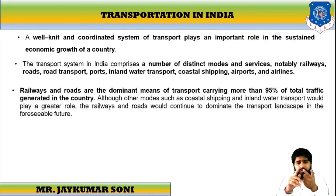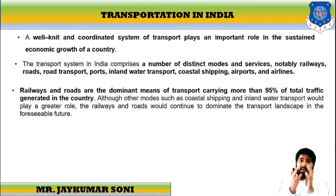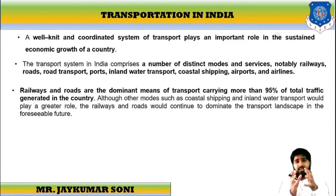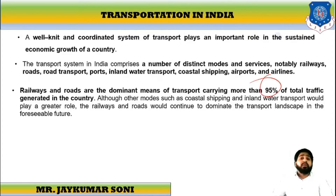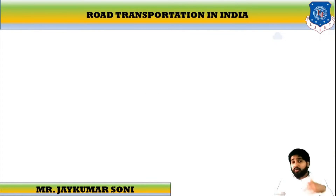Out of all the modes — water transport, air transport, and land transport — land transport plays a major role, because whenever we want to move from one place to another, we will majorly choose land transport. In land transport, railways and road networks play an important role. Railways and roads are the dominant means of transport because they carry more than 95% of the total traffic generated in the country — meaning out of 100% traffic, 95% is covered by railway and road transport.